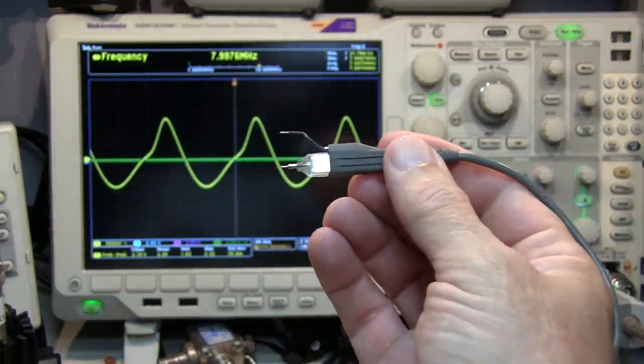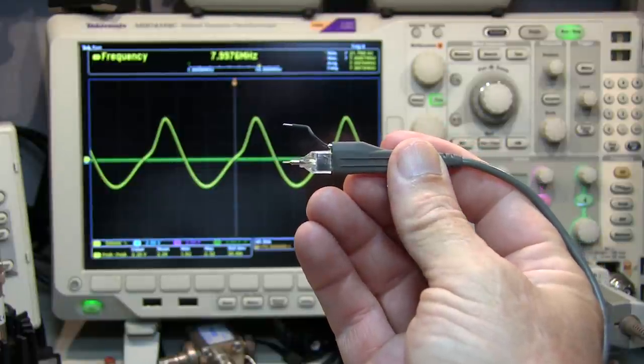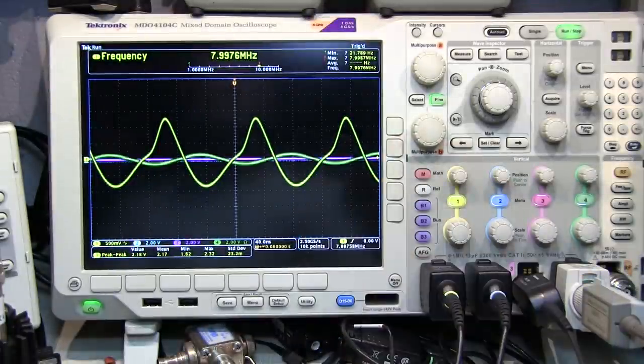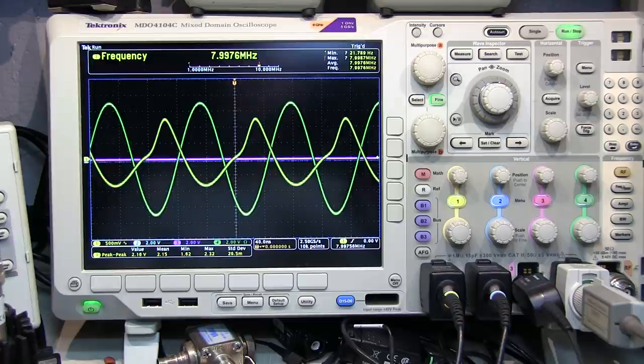So next up is our active probe with just 1 picofarad, or less than 1 picofarad of capacitive loading. And probing that same spot on our oscillator, we can see that the output amplitude has not dropped very much, so it's 2.12 volts. And the frequency, 7.9976, didn't change.